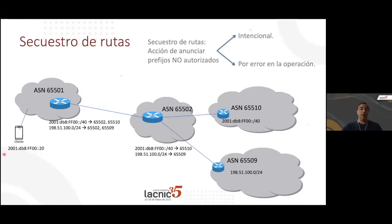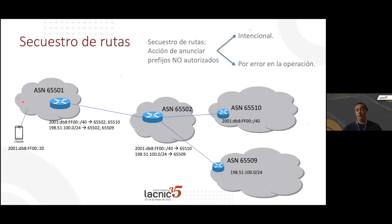Here you have an example. A client wants to go to address 2001:db8:ff020, which is in autonomous system 2001:db8:ff040. When this client wants to get there, it sends traffic to its default gateway. Autonomous system 65501 has BGP tables telling it that to reach 2001:db8:ff40:/48, it has to go to 65502 and then to 65510. This router knows how to get there through two autonomous systems.